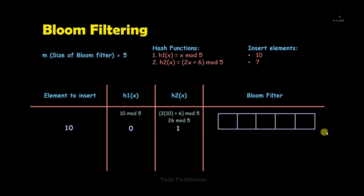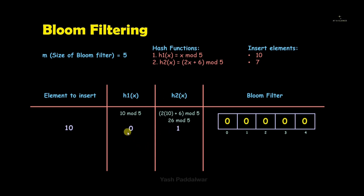Now we construct the bloom filter. Since the size is 5, we have 5 compartments with indices 0, 1, 2, 3, and 4. We first fill all values with zeros. Then, since h1 output is 0 and h2 output is 1, we set the value to 1 at index 0 and to 1 at index 1. Whatever output we get from the hash functions, we write 1 at that particular index.